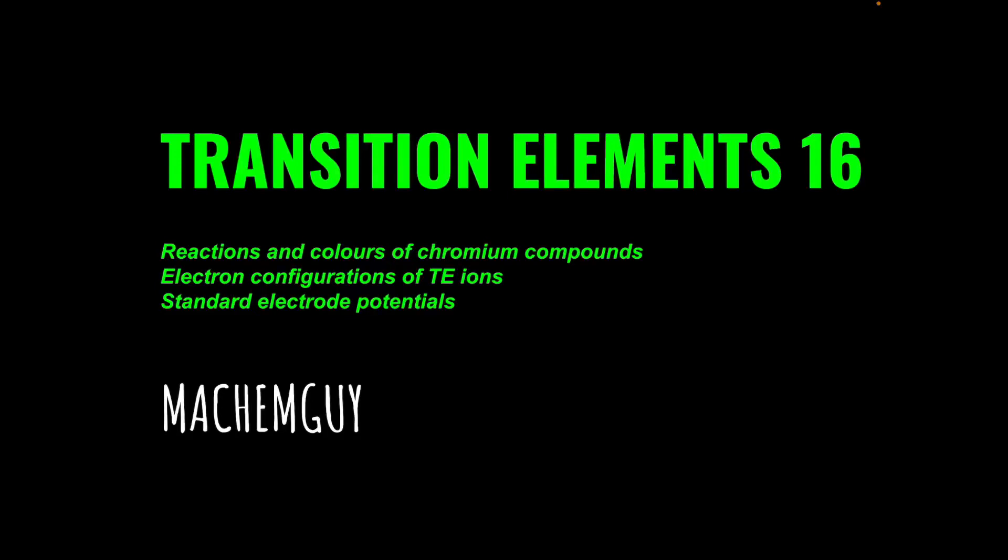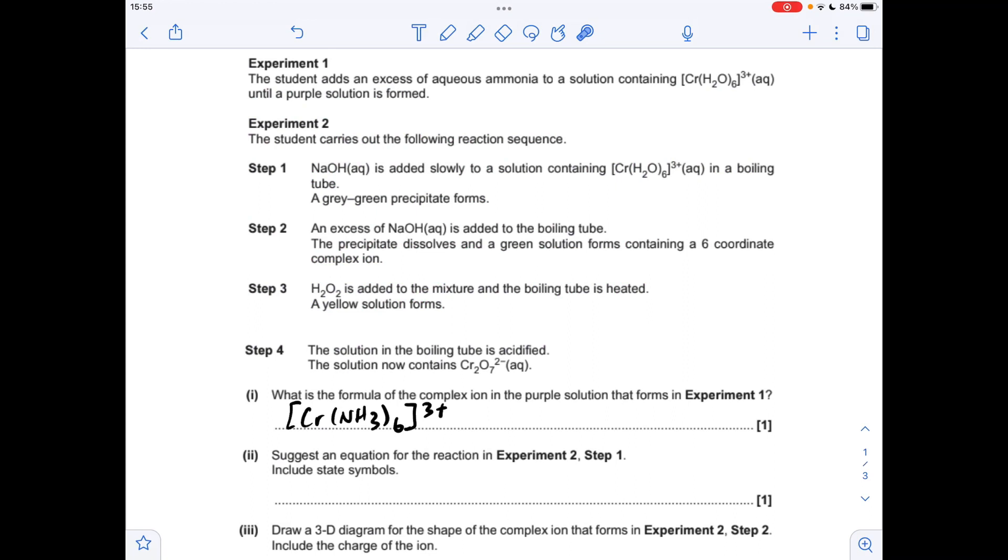I've got another question for the transition elements playlist, so this one covers the reactions and colors of chromium compounds, electron configurations of transition element ions, and standard electrode potentials. As always, the link to the questions is in the description of the video if you want to try it first. Okay, so we'll make a start. So in Experiment 1, the complex that's formed that has this purple color is Cr(NH3)6 with a 3 plus charge.